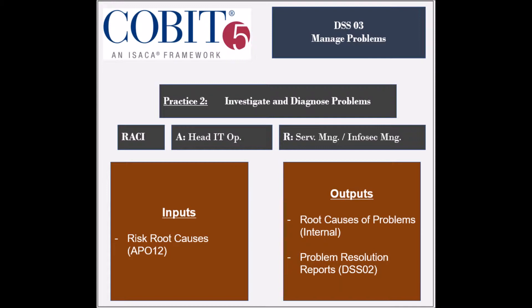The practice receives one input, which is the risk root causes from the APO12 process. It generates two outputs, which are the root causes of problems to be used internally, and the problem resolution reports to be used by the DSS-II process.